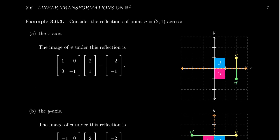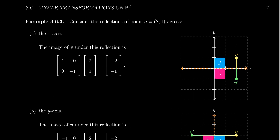Let's see some examples. Consider the point v = (2, 1). Reflecting it across the x-axis sends it to (2, -1) — the y-coordinate changes sign. We can verify: multiplying the matrix [1, 0; 0, -1] by the vector (2, 1) gives (2, -1). So having a -1 in the second diagonal position reflects across the x-axis.